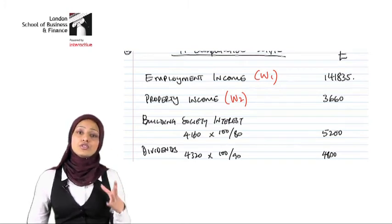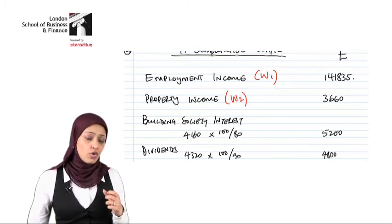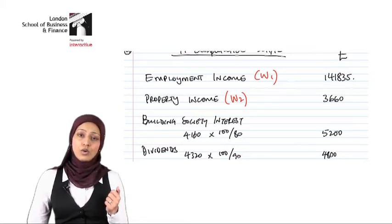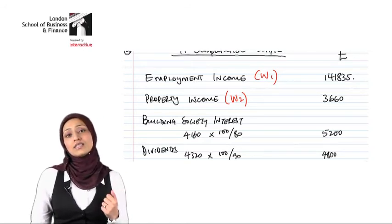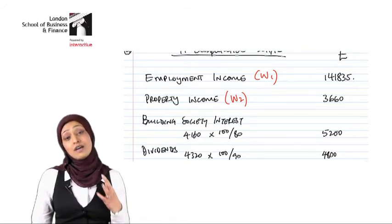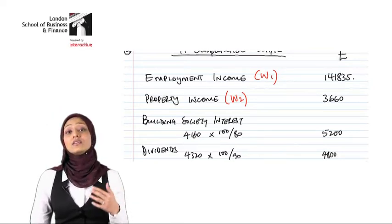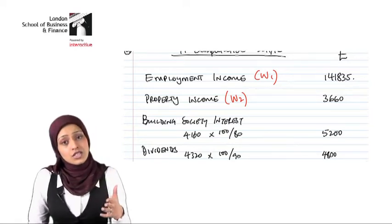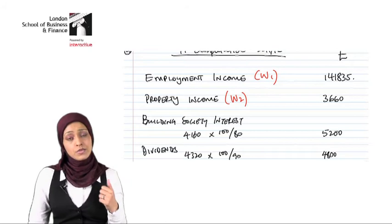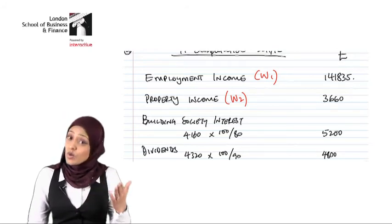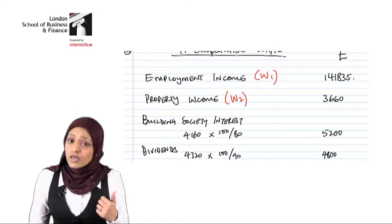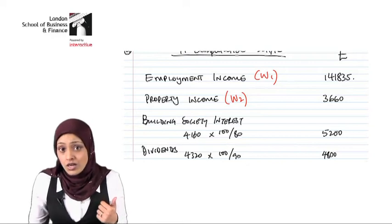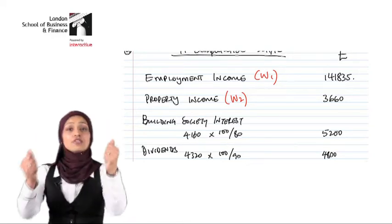The total of the property income is 3,660, which corresponds to what you have on your income tax computation. It's very important to cross-reference your workings so it's easier for the marker to follow. I always tell students: you have done all the hard work — five to six months studying the paper, answering questions, going into the exam. Once you've done all of that, it's in the hands of the marker. Be nice to the marker. Your exam paper is in his hands.